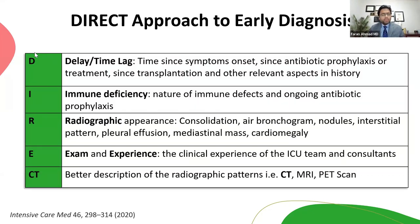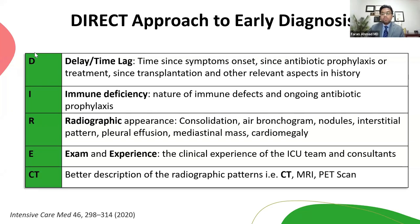Once we have that understanding, we look at what sort of immune deficiencies are present and which arms of the immune system are impaired. The next step is radiographic appearance — on an X-ray you may find consolidation, air bronchogram, fluid effusion, or an interstitial pattern. Then comes exam and experience, where clinical insight is key. Previously we relied heavily on exam and experience; now AI is increasingly involved in early detection of sepsis via early warning systems based on natural language models. Finally, based on all that information, we proceed to better radiological patterns — CT scan, MRI, and PET scan.